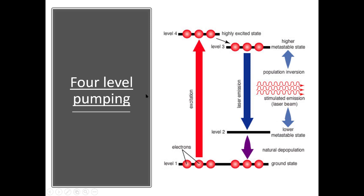In the 4-level pumping scheme, two metastable states are involved. Electrons are excited to the high energy state from the ground state, then they de-excite to the first metastable state. Population inversion is achieved between these two metastable states, and laser is produced by stimulated emission between them.